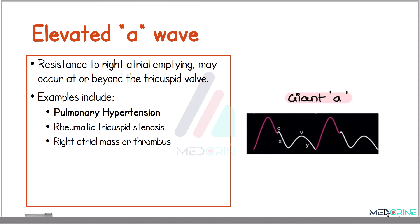Let's proceed to abnormal jugular venous pressure waves. The first is an elevated A wave, which indicates increased resistance to right atrium emptying, often due to obstruction at or beyond the tricuspid valve. Common causes include pulmonary hypertension, rheumatic tricuspid stenosis, or a right atrial mass or thrombus.